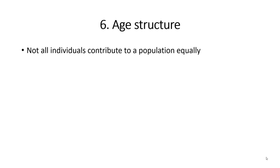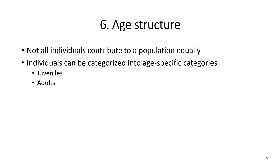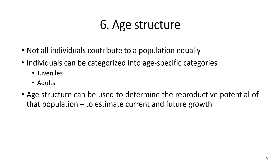Not all individuals contribute to a population equally. Individuals can be categorized into age-specific categories such as juveniles and adults. Age structure can be used to determine the reproductive potential of that population in order to estimate current and future growth.